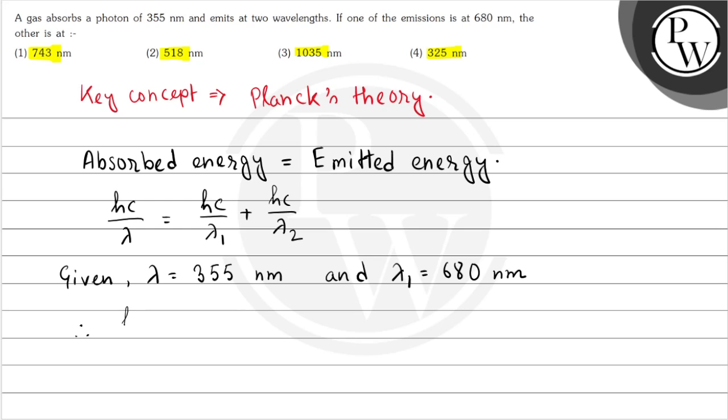We will have hc by 355 is equal to hc by 680 plus hc by lambda 2.